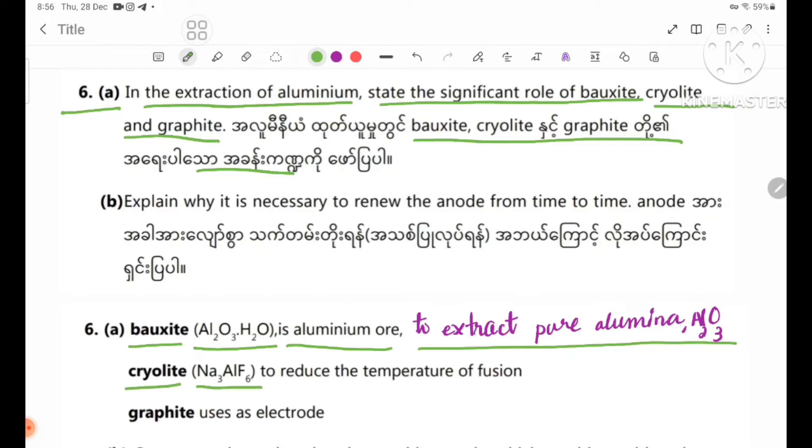Cryolite, Na3AlF6, is used to reduce the temperature of fusion. Graphite is used as an electrode in the aluminum extraction process.